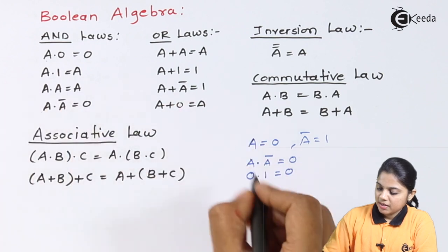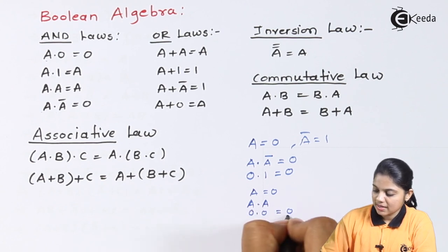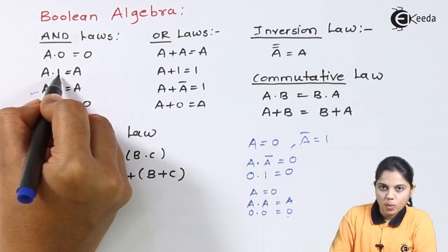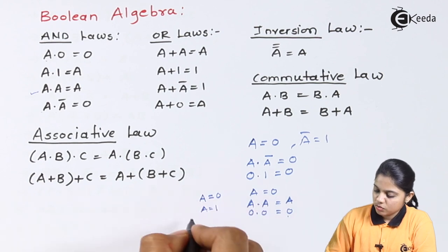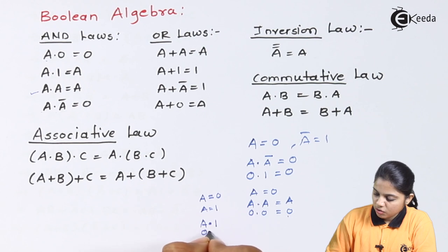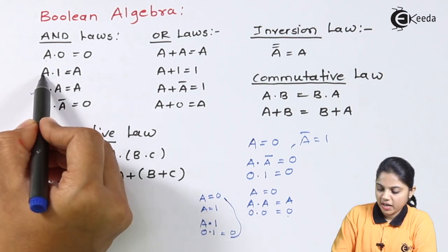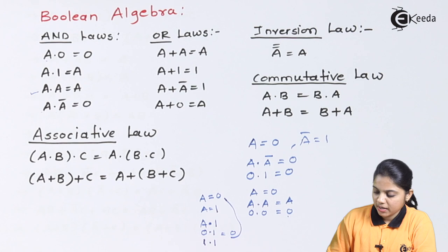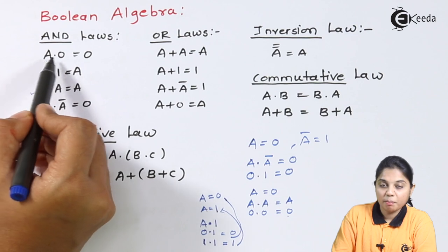Similarly, if A is equal to 0, then A dot A means you are multiplying 0 with 0, giving you 0, which is nothing but A. So A dot A equals A. For A dot 1: if A is equal to 0, you multiply 0 dot 1 and your output will be 0, which is A. If A is equal to 1, you multiply 1 with 1 and output will be 1, again equal to A. So A dot 1 is equal to A. These are called AND laws because you are ANDing or multiplying the inputs.